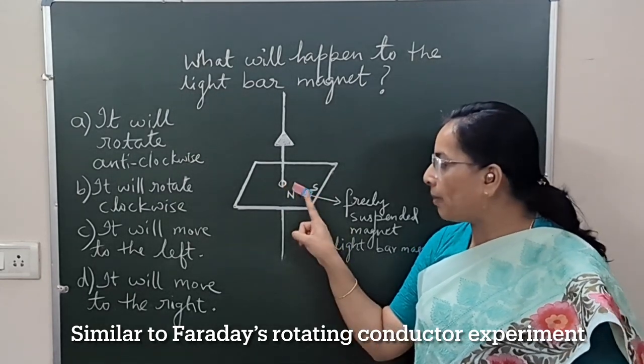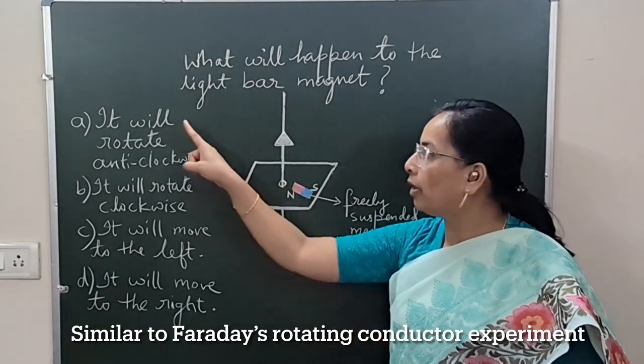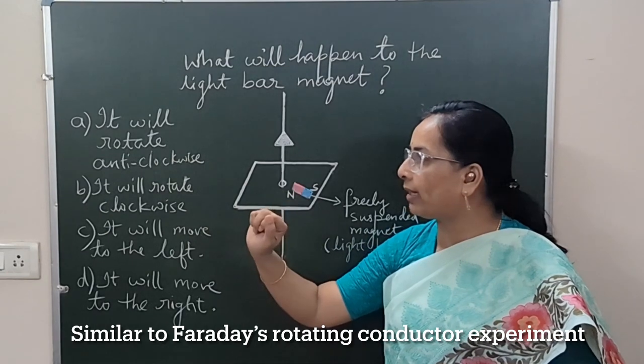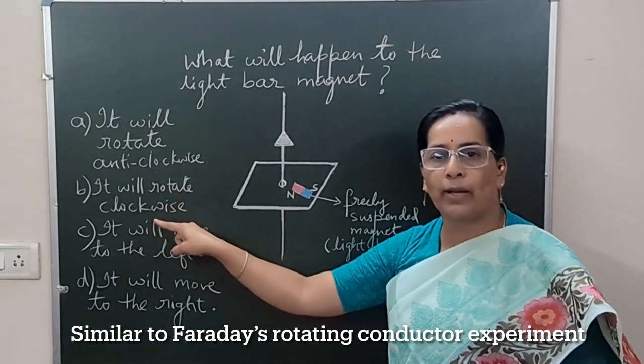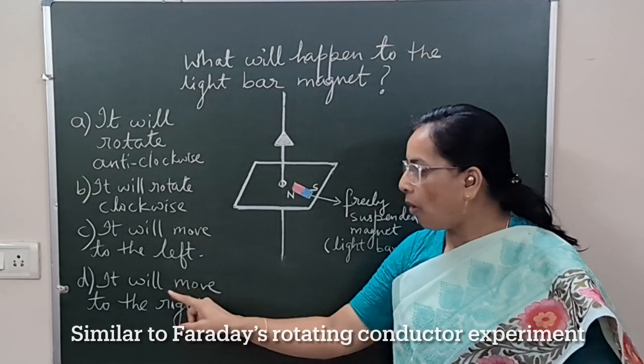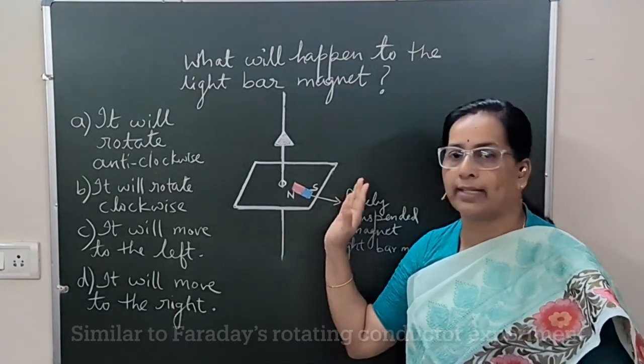Then this bar magnet, will it rotate in anti-clockwise direction? Will it rotate in clockwise direction? Will this move towards left or will it move towards right?